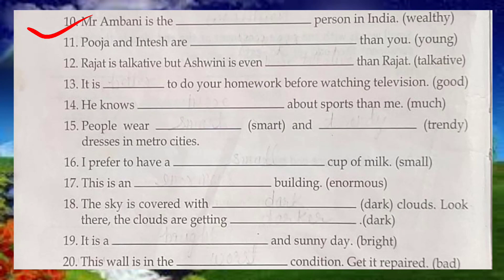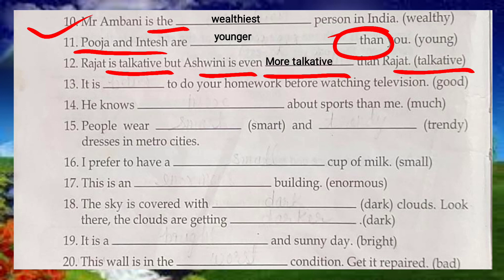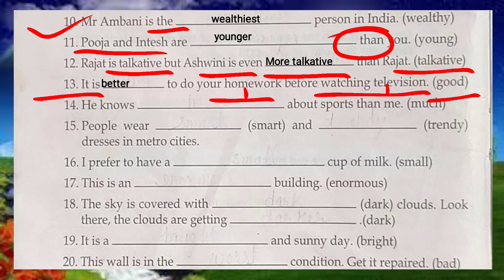'Mr. Ambani is the wealthiest' — 'the' is coming, so superlative degree 'wealthiest' is used. 'Puja and Nitesh are younger than you' — 'than' is coming, so comparative degree 'younger' is used. 'Rajat is talkative but Ashwani is even more talkative than Rajat' — comparative degree between two people, and 'talkative' has many syllables, so we use 'more talkative.' Doing homework is better than watching television — comparison between two things, so 'better' is used.